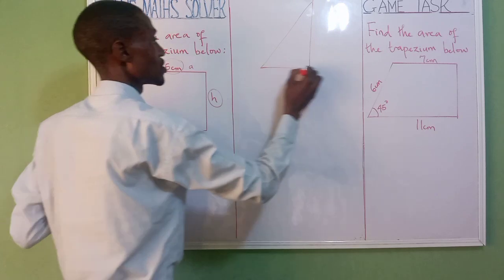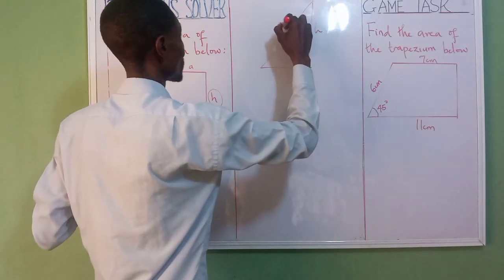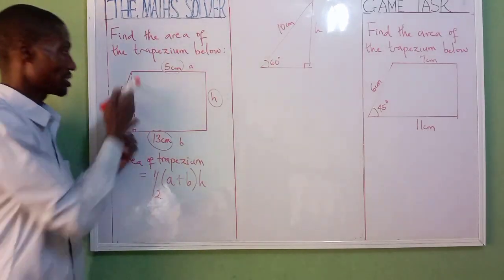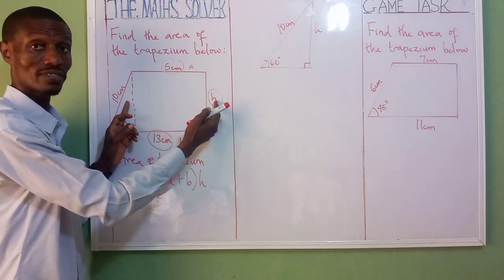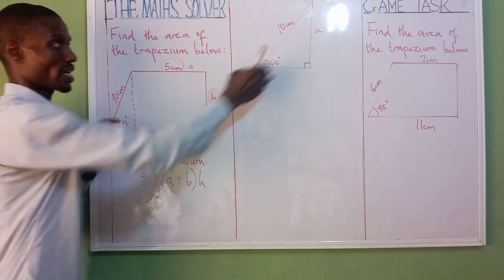We have this - we have this height, this 10 centimeter, and this 60 degree. Look at it. This is our height. Anything you get here, it's also going to be equal to this. It's the same thing. So whatsoever I get here, it's also equal to this, so I can now use it here in the formula.